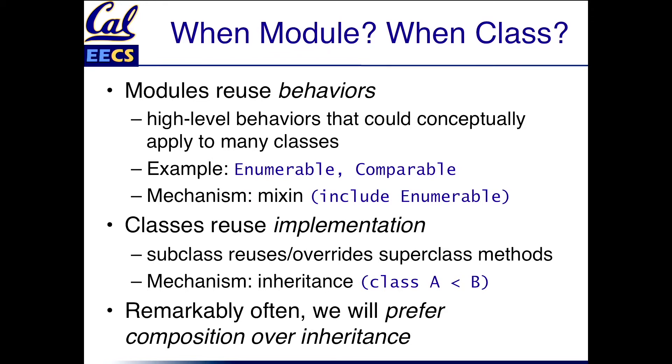If you want to reuse implementation then you'd use the traditional thing. Classes have ancestors, they have subclasses and as we'll see contrary to what you might think coming from the Java world remarkably often what you want is the first one. You don't want to reuse implementation you want to define behaviors and reuse them.